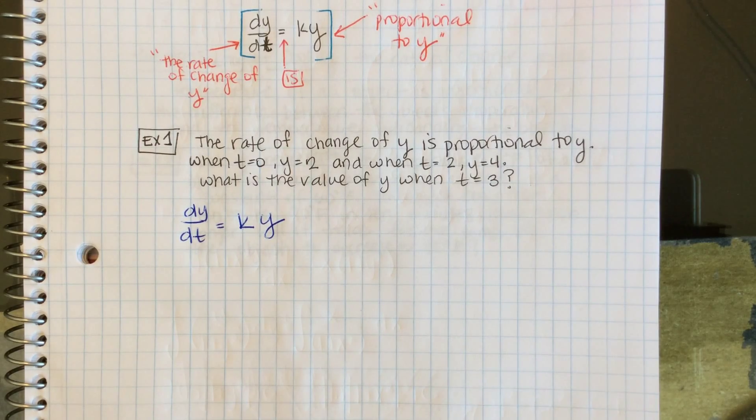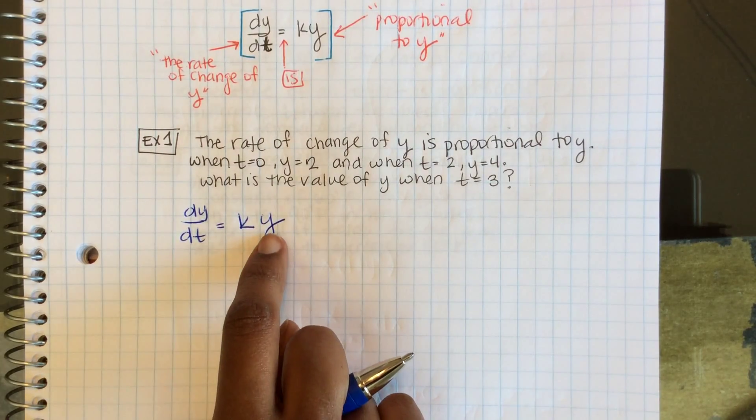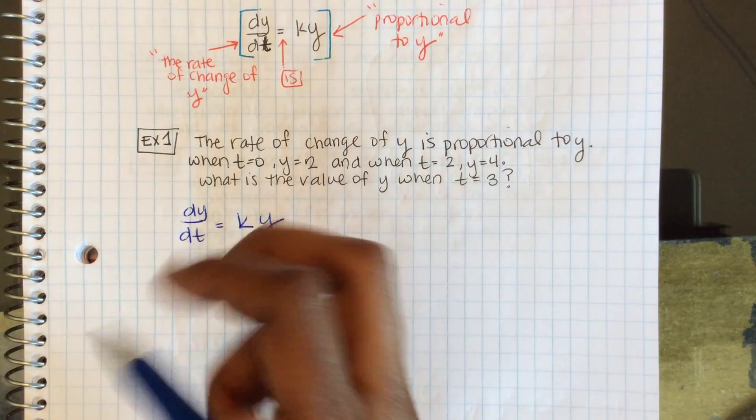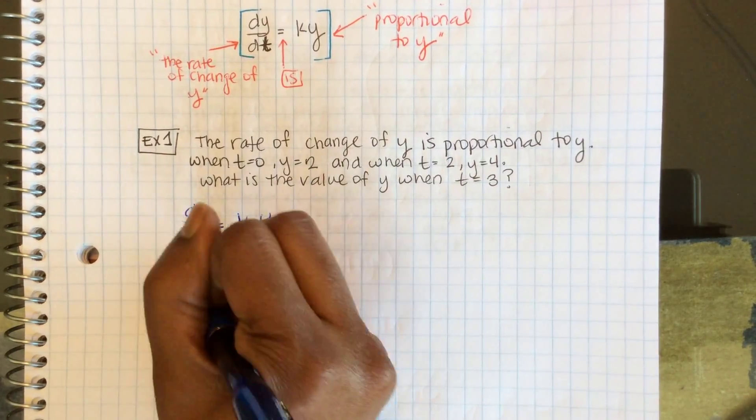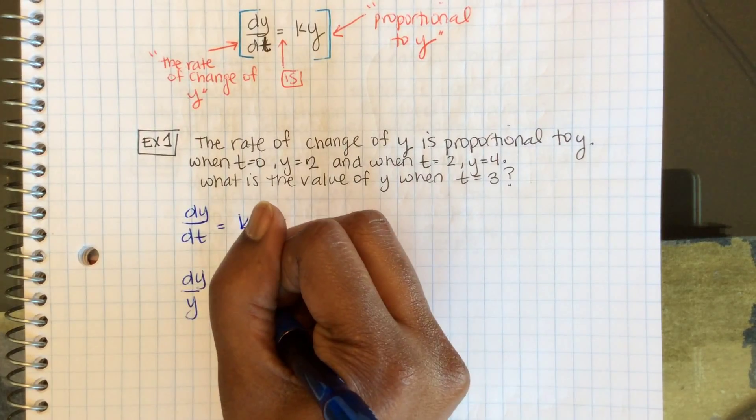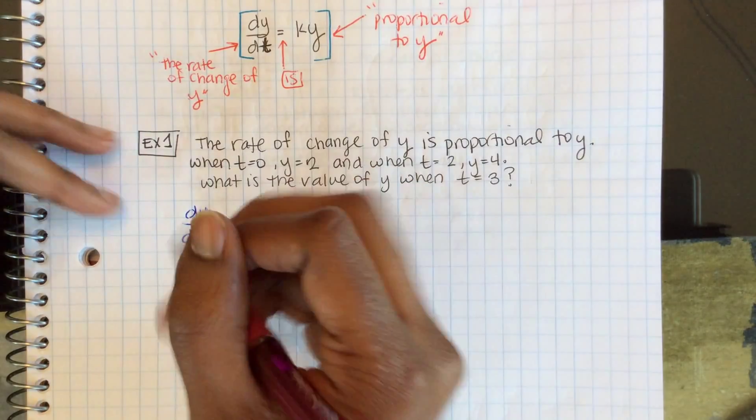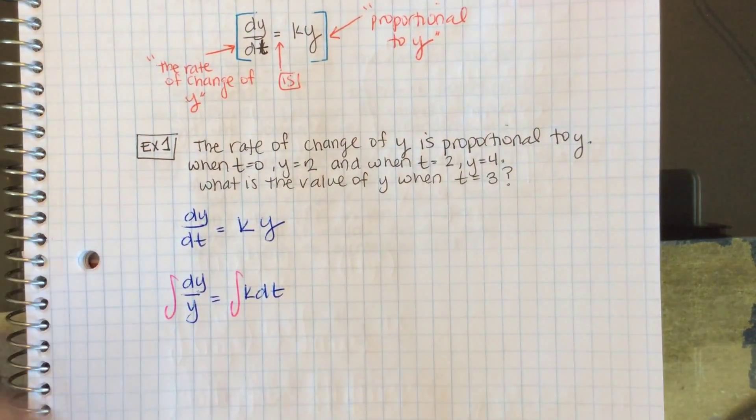Now I'm going to solve this differential equation for y. First, I'll separate my variables. Dividing by y and multiplying by dt, I have dy/y = k dt.